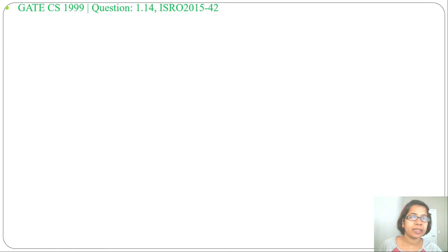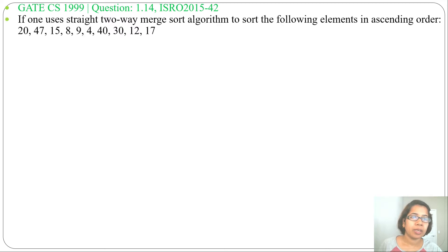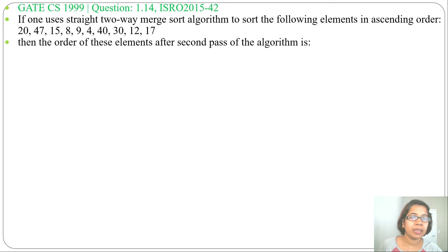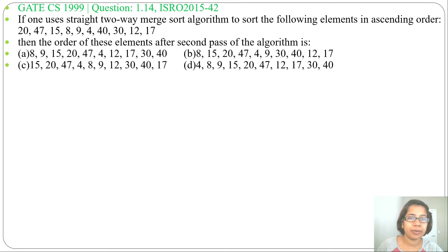Next question, it was asked in GATE CS 1999, question number 14, and also in ISRO 2015, question number 42. If one uses the straight two-way merge sort algorithm to sort the following elements in ascending order — a list is given — then the order of elements after the second pass of the algorithm is, and four options are given.